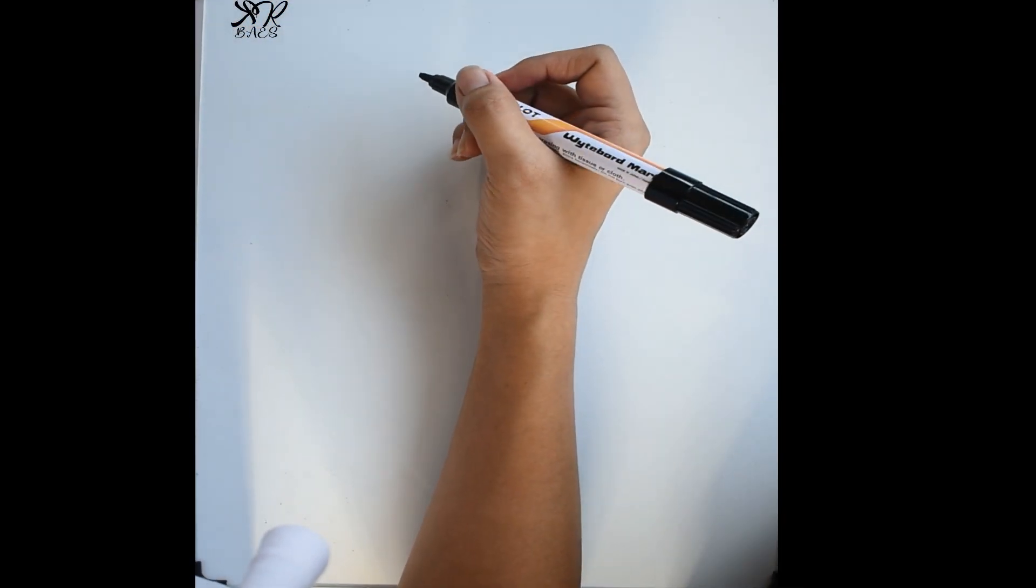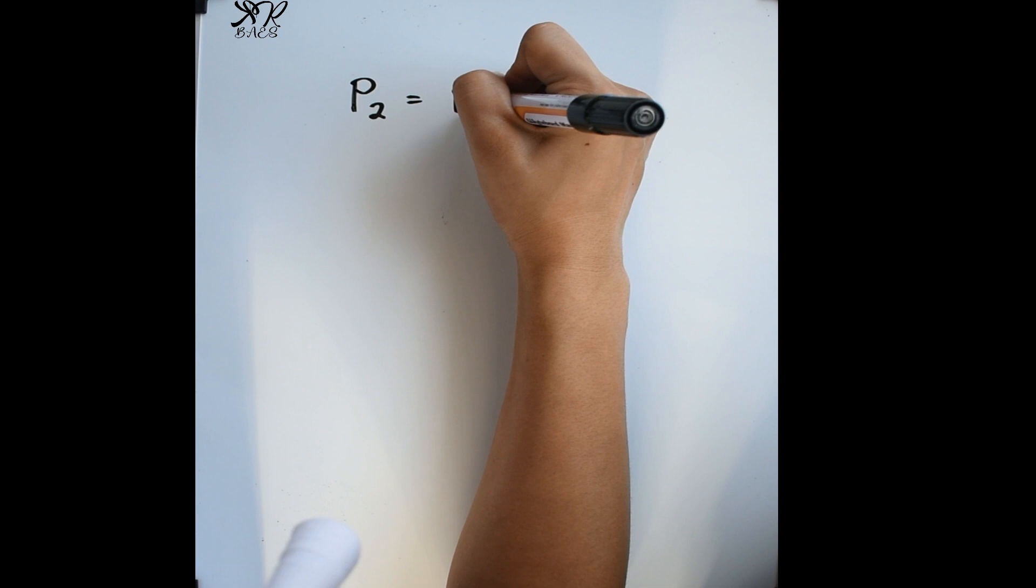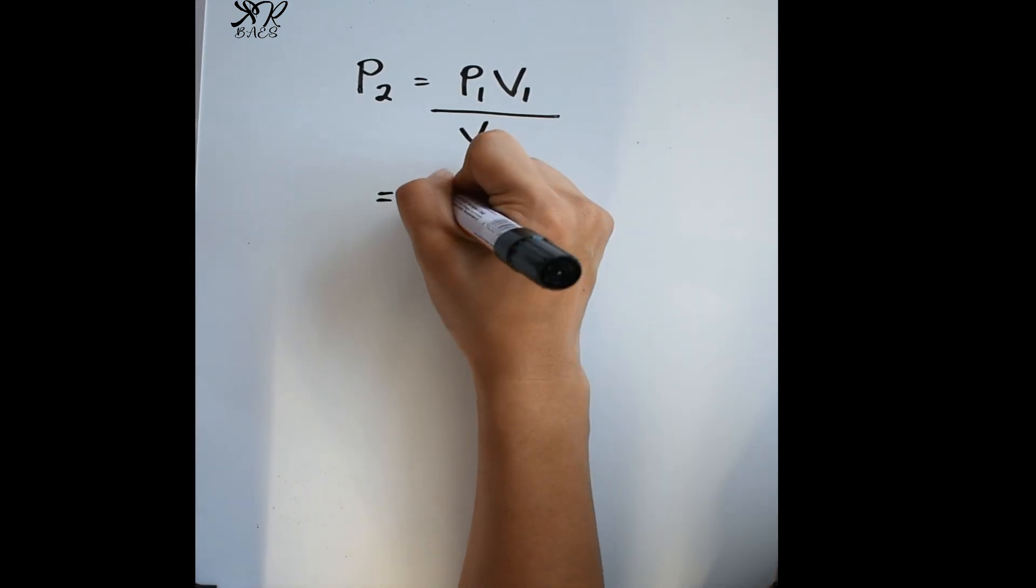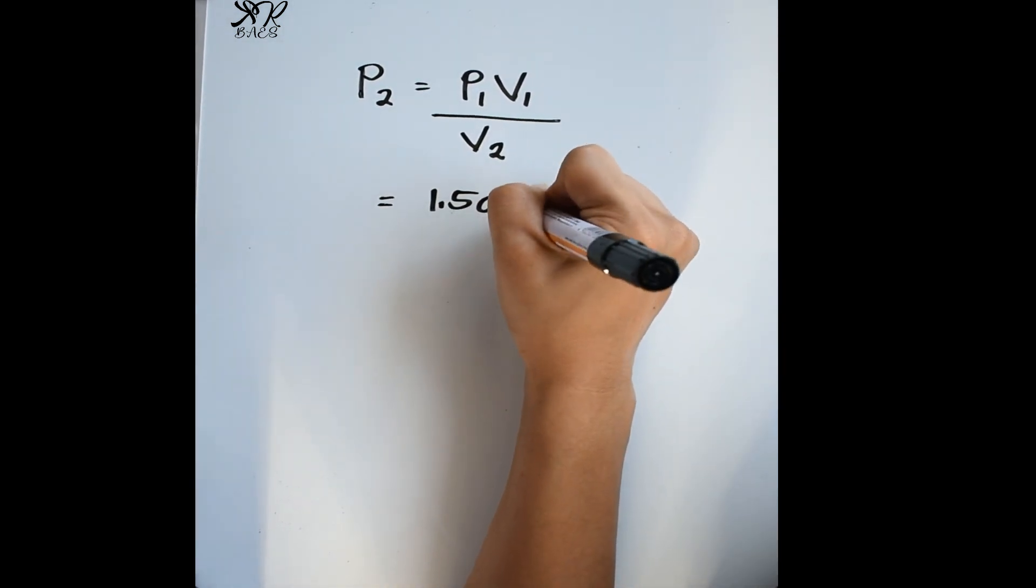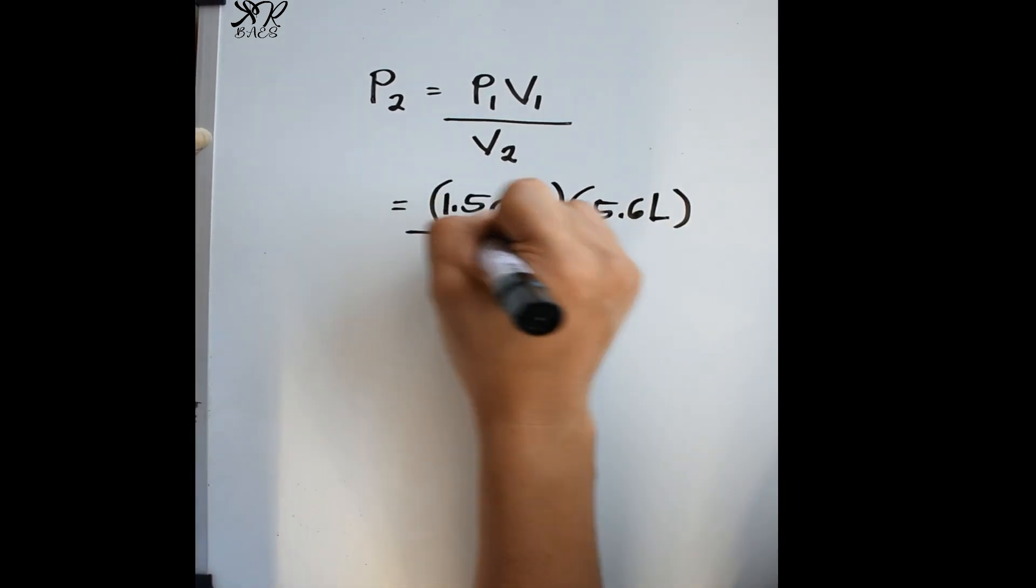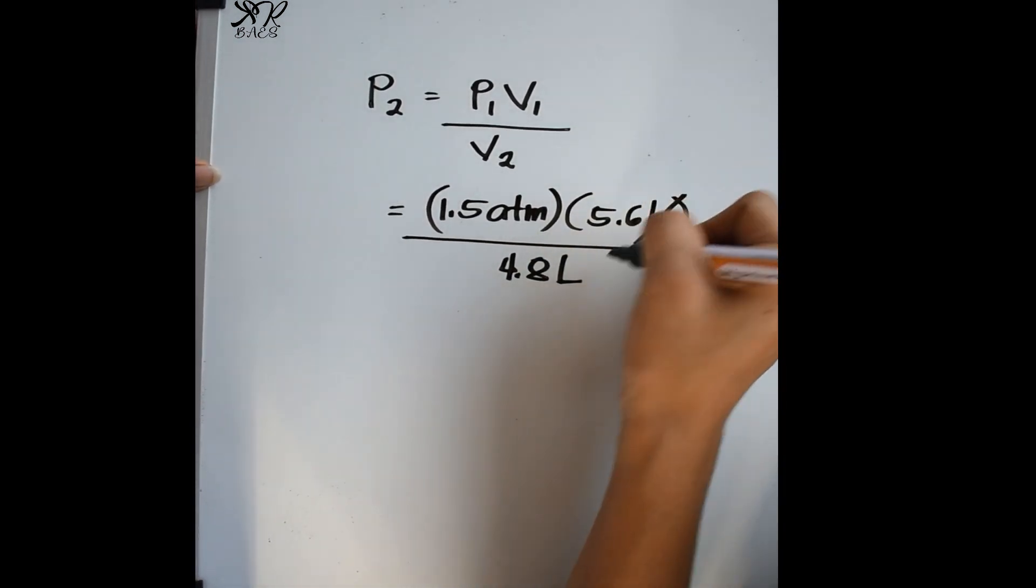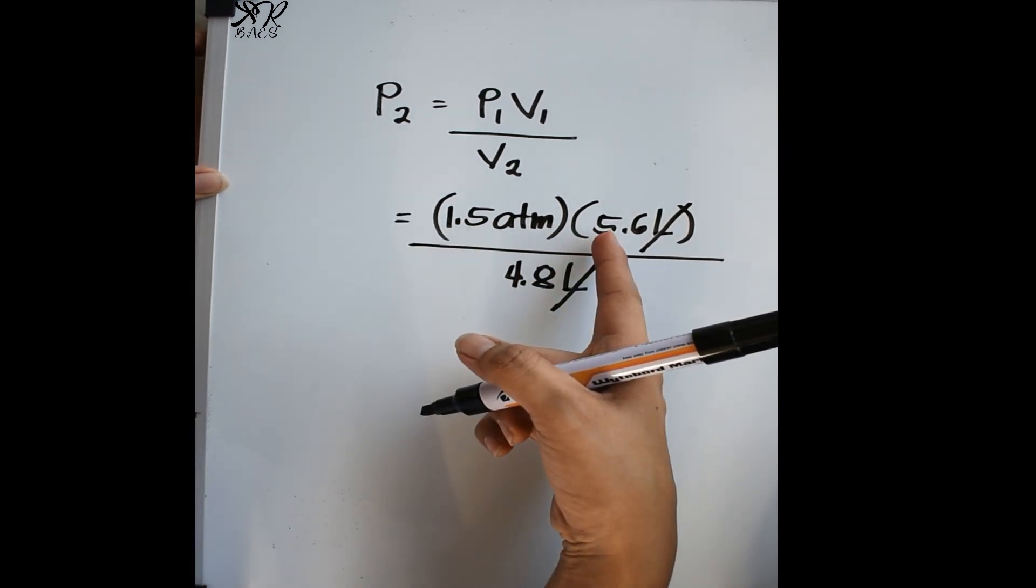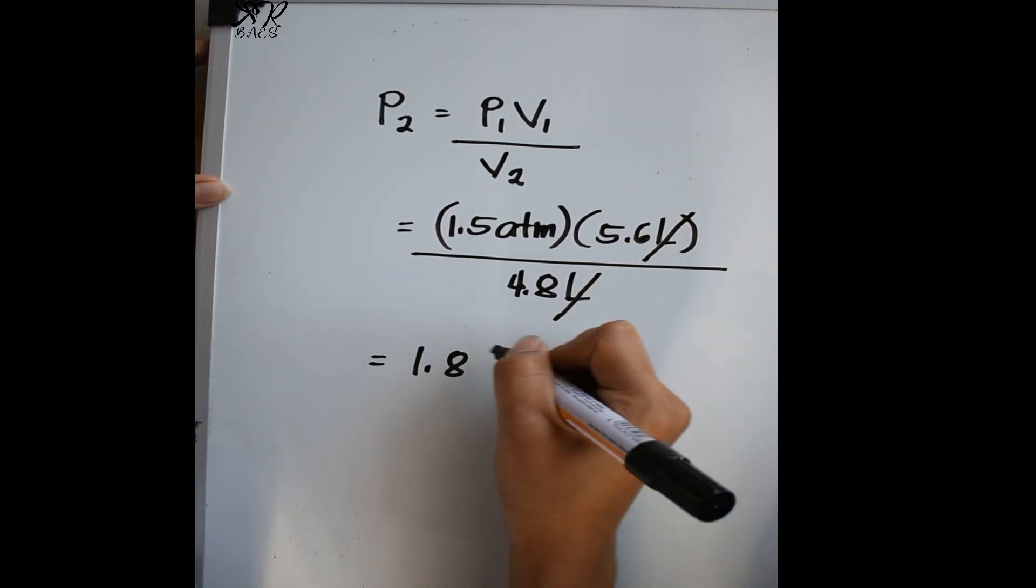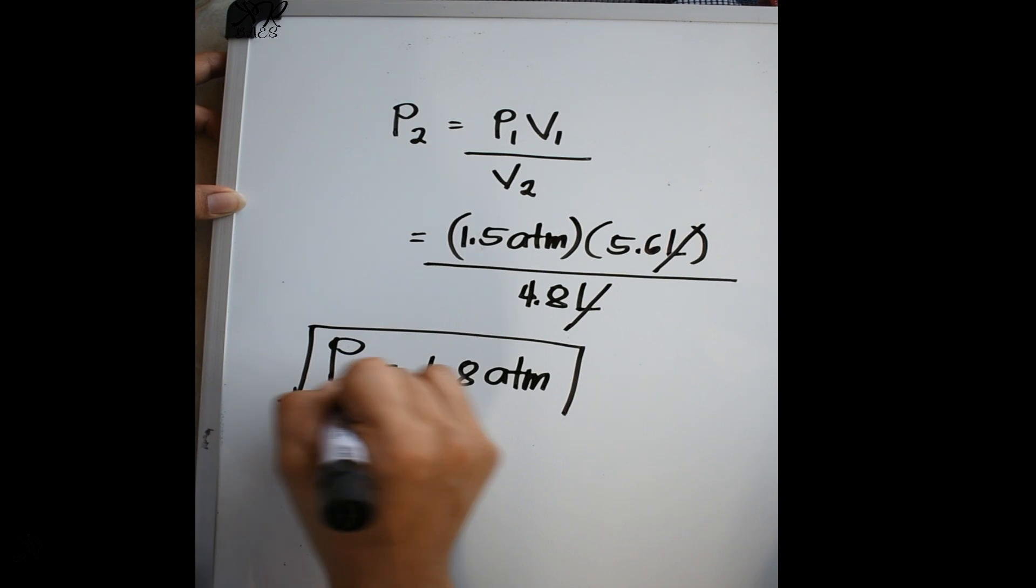Since we are looking for the final pressure, we are going to use the formula P2 is equal to P1 times V1 all over V2. And this is equal to 1.5 atmosphere times 5.6 liters all over 4.8 liters. We cancel the unit liter, multiply 1.5 to 5.6 and divide it by 4.8. So the answer is 1.8 atmosphere. So our final pressure is 1.8 atmosphere.